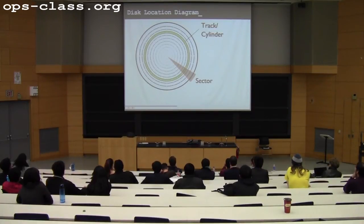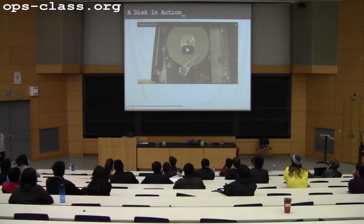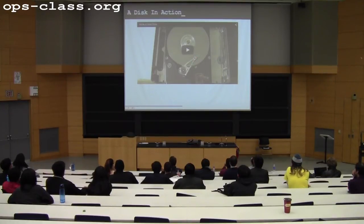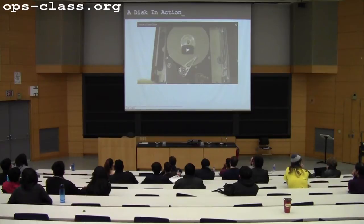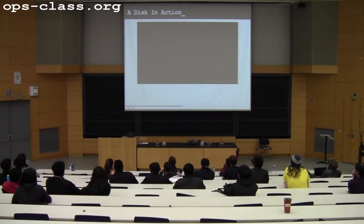Here's the diagram — the track, the cylinder as a vertical projection of tracks through all the platters, and there's the sector. You can find cool videos of disks online. Before I show this video, what part of the disk is this? It's the arm — this is one of the heads. The other heads are in between the other platters. Here are the platters and the spindle driving the whole thing. My favorite part of this video is it inadvertently shows you how messed up early Windows file systems were.